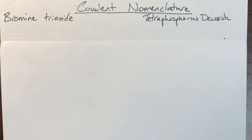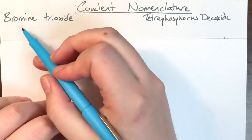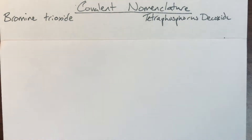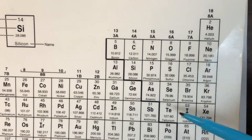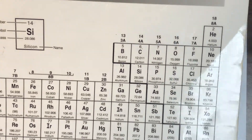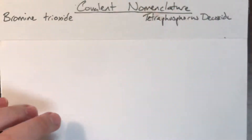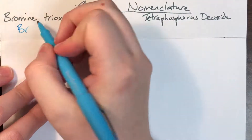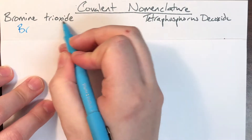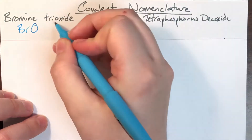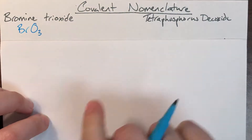We're going to be practicing some covalent nomenclature as well as some formula writing. The first compound is bromine trioxide. Covalent compounds are non-metals only, found on the right side of the stair step. Bromine is Br — no prefix means only one, so no subscript needed. Trioxide: oxide is the anion name for oxygen, which is O, and tri means 3, so it's BrO3.